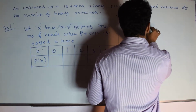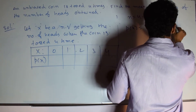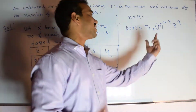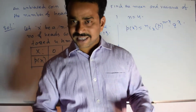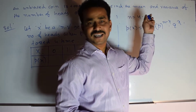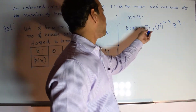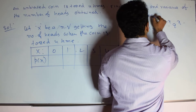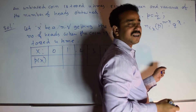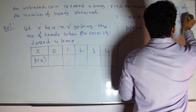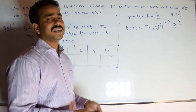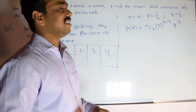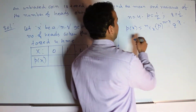Binomial distribution formula: P(x) = nCx × p^(n−x) × q^x. What is p? Probability of getting success — in our case, getting a head. What is q? Probability of getting failure — in our case, getting a tail. We have already fixed n = 4. The random variable x takes values 0, 1, 2, 3, 4. Now we calculate using this formula. p equals probability of getting head = 1/2. q equals probability of getting tail = 1/2. In most cases they use this example, only changing the value of n.